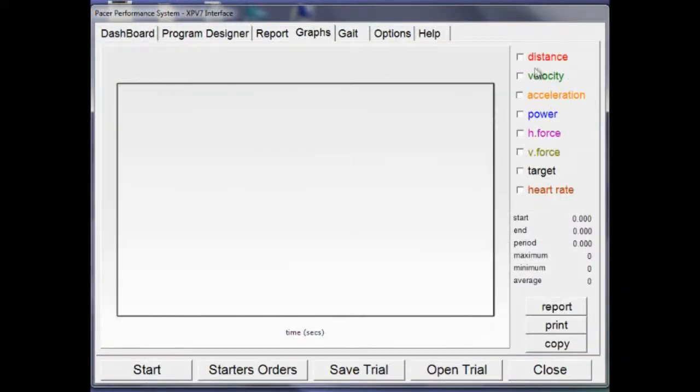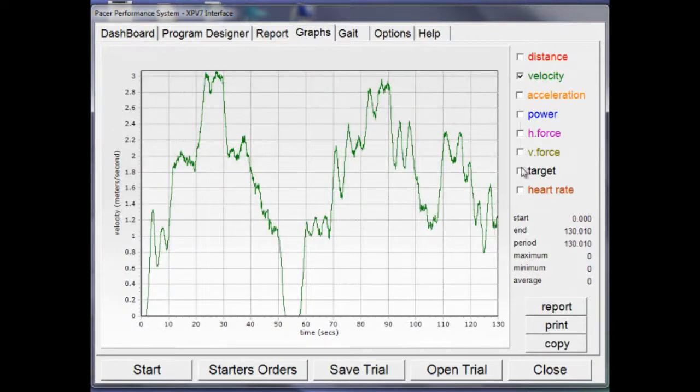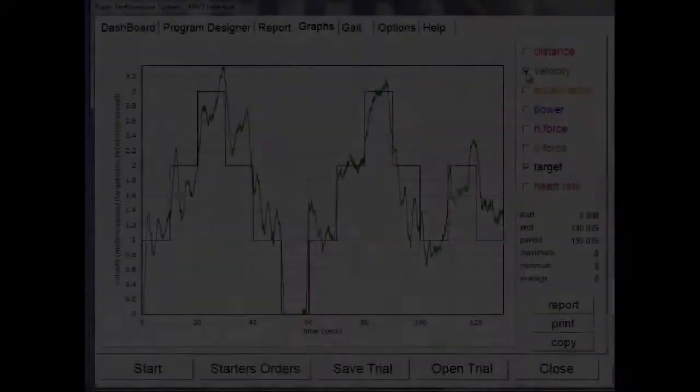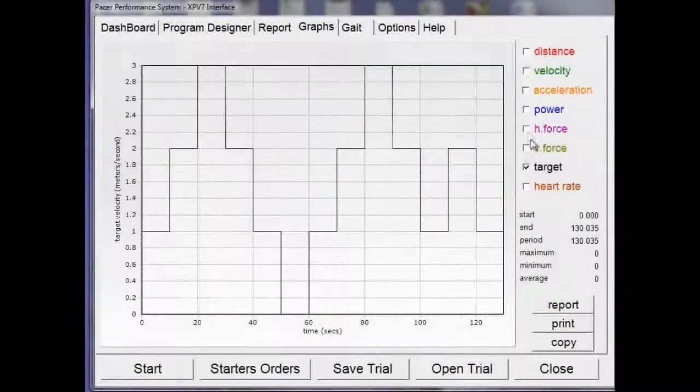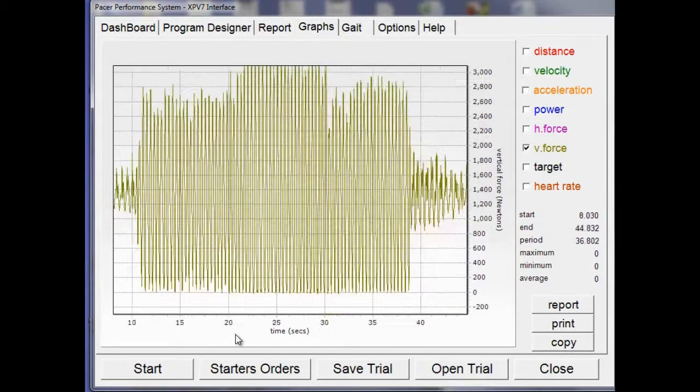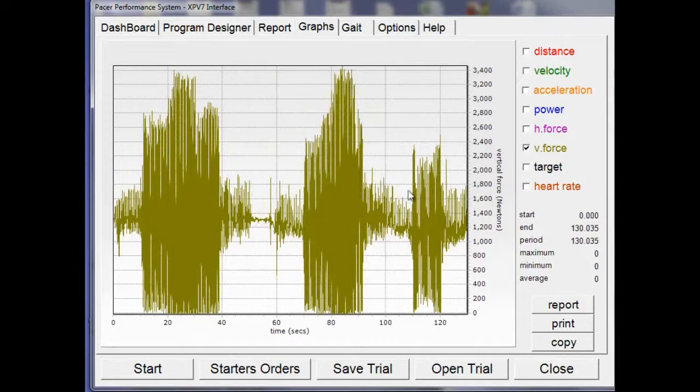And then you can go in and look at the graphs. So if we click on velocity and target you can see how well they tracked the target velocity. You can click on vertical force and zoom into a portion of the graph by left clicking and dragging, and then zoom back out by left clicking and dragging in the other direction.